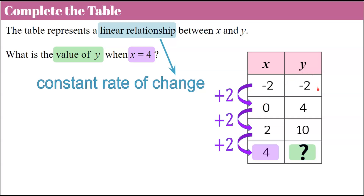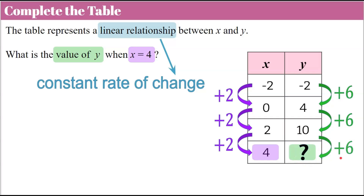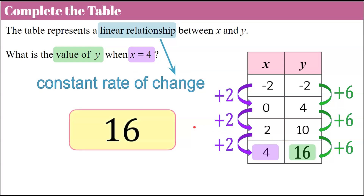Now let's look at Y. We start at negative 2, go to 4 — an increase of 6. Then 4 to 10, another increase of 6. So 10 to the next value, the unknown, will also be an increase of 6. 10 plus 6 is 16. So when X is equal to 4, Y is going to be equal to 16.